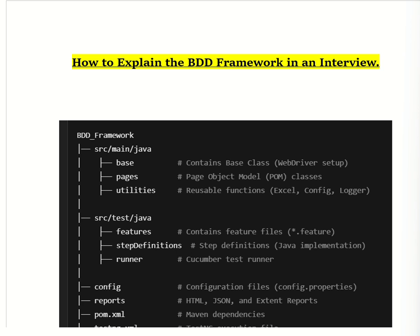Step definition means: it converts Gherkin steps into executable Java code. Each Gherkin step — Given, When, Then — is mapped to a Java method using Cucumber annotations like @Given, @When, and @Then, which link the Gherkin step to the Java method. Inside each Java method we write Selenium or REST Assured code.